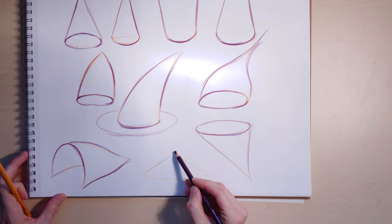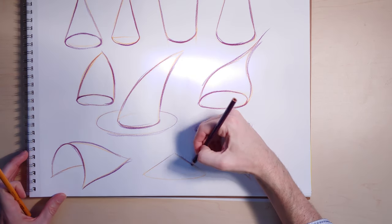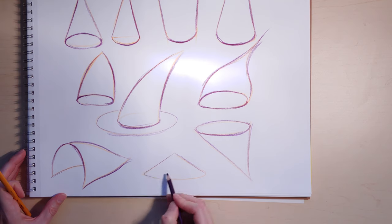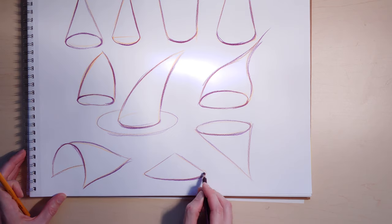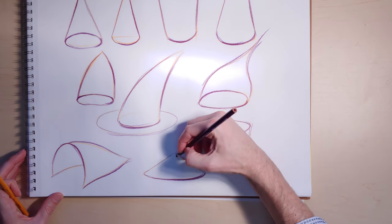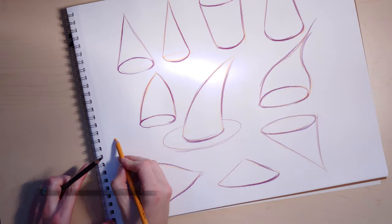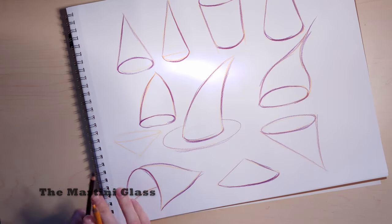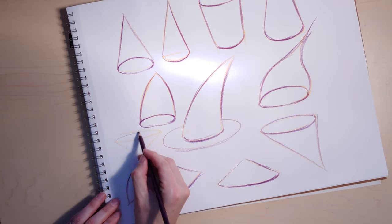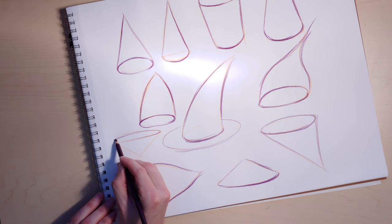You can also play around with how steep these cones are. So the first ones that we did, they're very tall and pointy. This one's short and squat. And this one is the kind of cone that you would use for wine glasses. You do something in the middle, turn it upside down, and then you get a basic martini glass form.